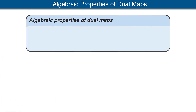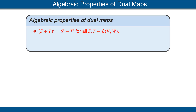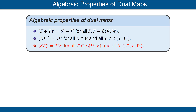The algebraic properties of dual maps are straightforward. First, if S and T are linear maps from V to W, then the dual map of (S + T) equals the dual map of S plus the dual map of T. Second, if T is a linear map from V to W and λ is a scalar, then the dual map of λT equals λ times the dual map of T. Third, if T maps from U to V and S maps from V to W, then the dual map of ST equals the dual map of T times the dual map of S. Notice the reversed order of S and T on the two sides of this equation.